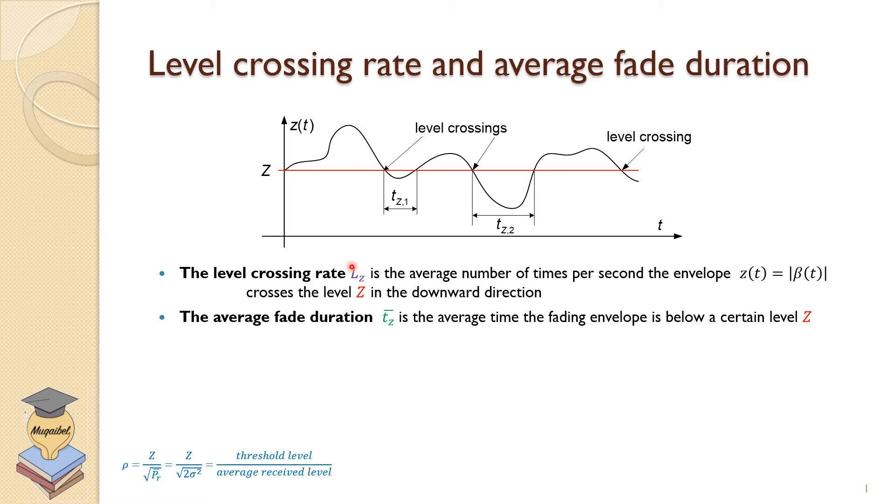While the average fade duration, T bar standing for the average Z, is the average time the fading envelope is below a certain level Z. So we'll take this time one, time two, time three, and we'll average them out.